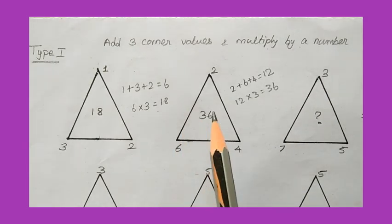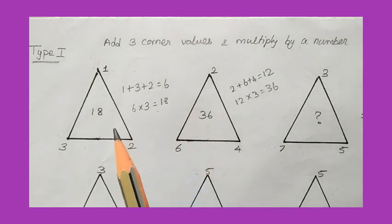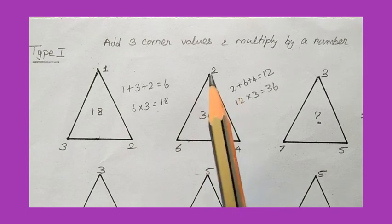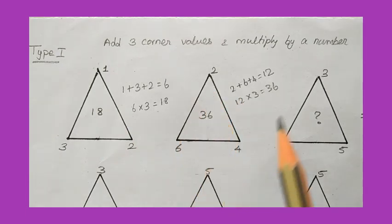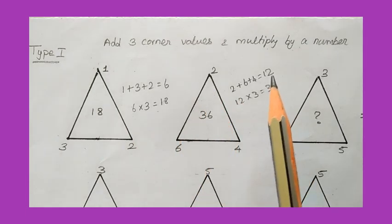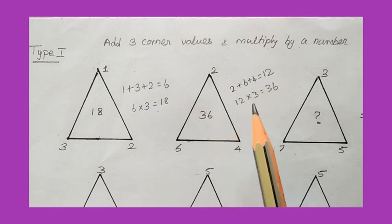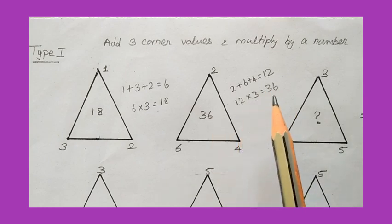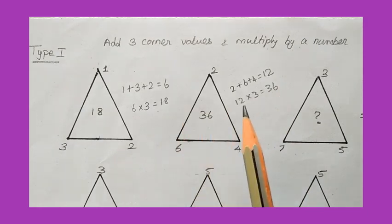For the second triangle, I apply the same logic. Adding the corner values 2 plus 6 plus 4 gives 12. The relationship between 12 and 36 is that 12 multiplied by 3 equals 36. So in the first two triangles this logic is working.